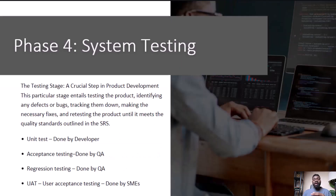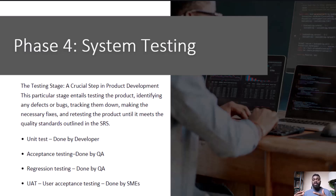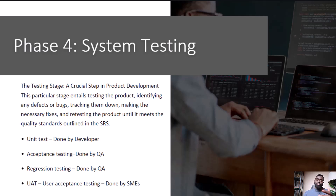System Testing: after writing the code, the software goes through a rigorous testing phase. Testers evaluate the software to find and fix any bugs or issues. Imagine it as a quality control step to ensure the software works correctly.